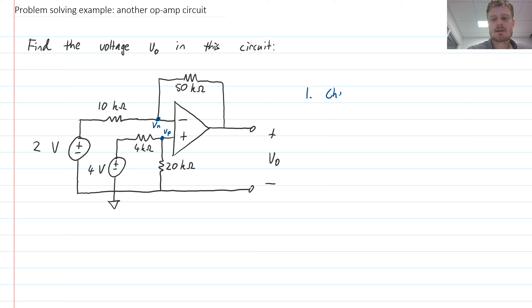Step one, check for negative feedback. We have that here because we can see a 50k resistor that connects back into the negative terminal. So we have negative feedback. That means that the op-amp is operating correctly.